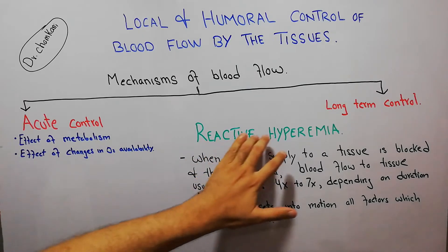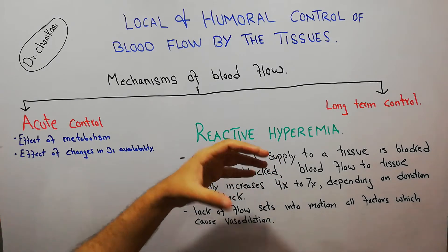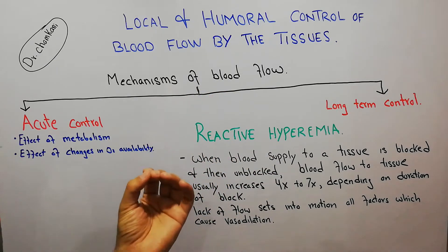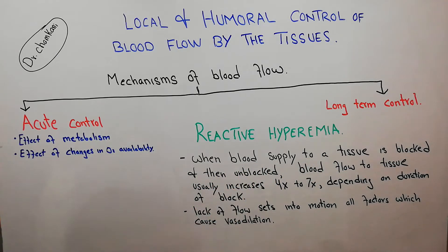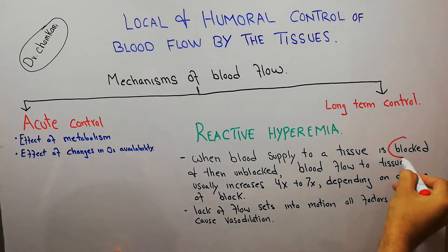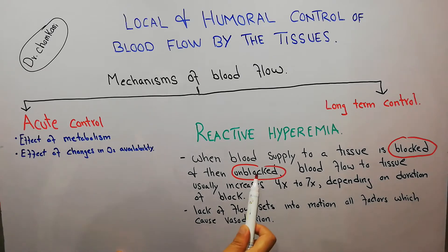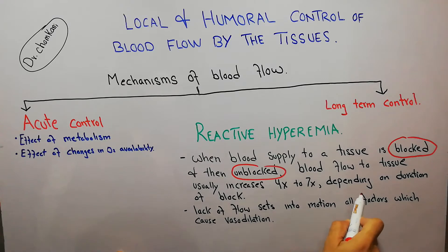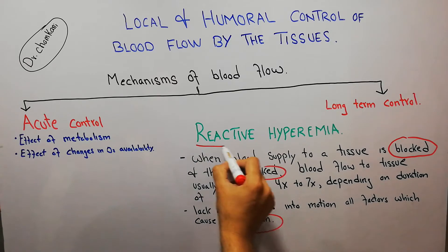Today we are going to discuss reactive hyperemia. Reactive hyperemia is basically the increased blood flow after a block has occurred in the flow of blood. When blood supply to a tissue is blocked and then unblocked, blood flow to the tissues usually increases four to seven times depending on the duration of the block, when the lack of blood supply sets into motion all factors which cause vasodilation. This increased amount of blood flow to the tissues is known as reactive hyperemia.